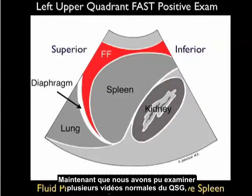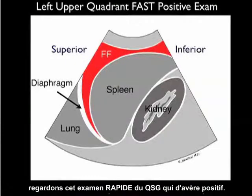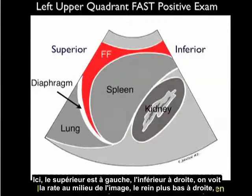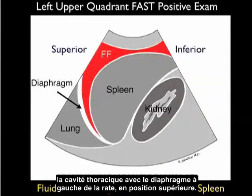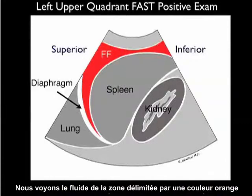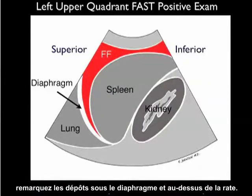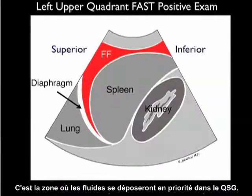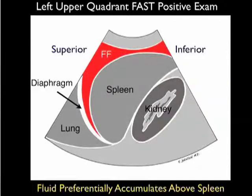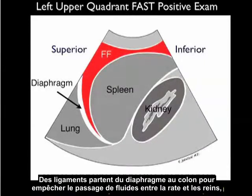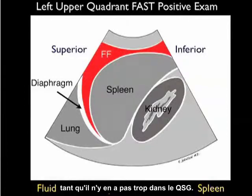Now let's look at a pictorial showing a positive left upper quadrant FAST exam. Superior is to the left, inferior to the right; we see the spleen in the middle, the kidney inferiorly, and the thoracic cavity with the diaphragm superior to the spleen. The area of fresh fluid is demarcated in orange and layers out predominantly below the diaphragm and above the spleen — this is where fluid preferentially deposits. Ligaments sling from the diaphragm to the colon, preventing fluid flow into the splenorenal space until the fluid collection is relatively large.